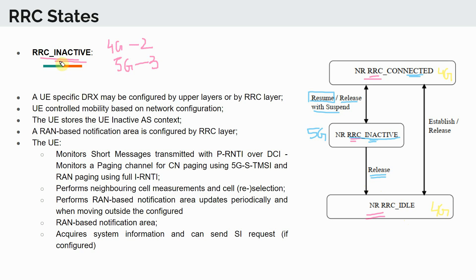In the inactive state, a UE-specific DRX (discontinuous reception) may be configured by upper layers or by the RRC layer. The UE will obey that specific DRX cycle when in inactive state, because it is actively listening to the paging channel. UE-controlled mobility is based on network configuration, so the UE looks at all the different cells in the area and performs selection and reselection as per the thresholds defined by the gNodeB.